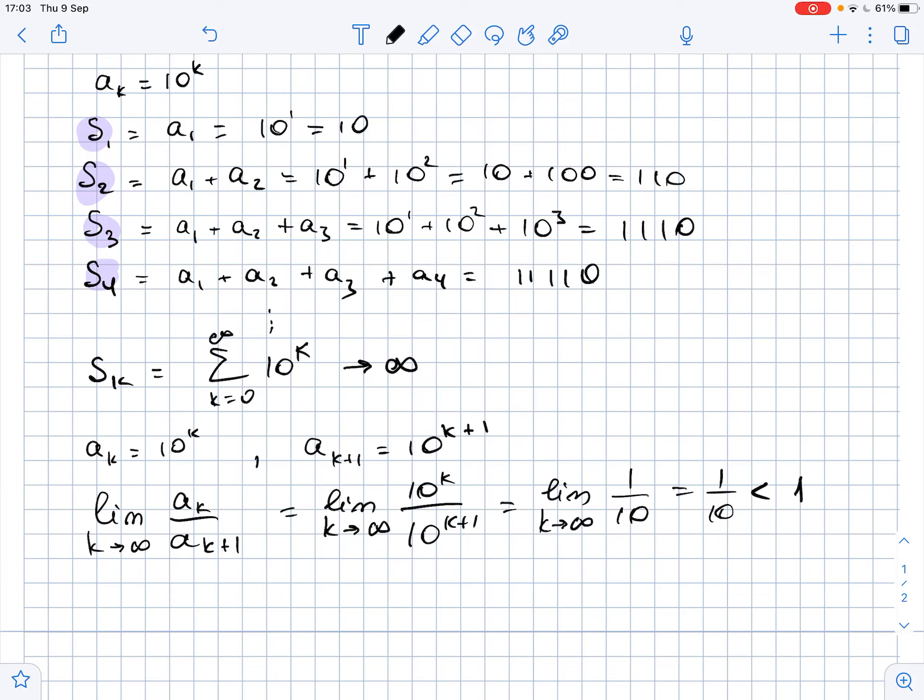As you can see, 1 over 10 is less than 1, so this means that our series is divergent.